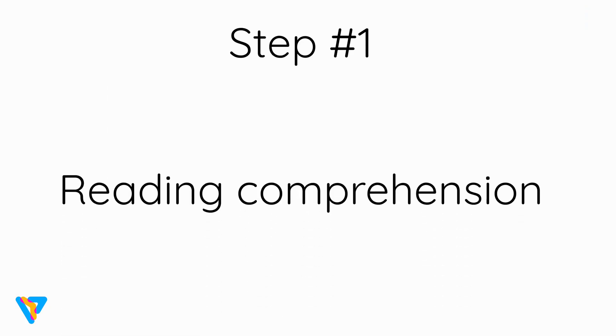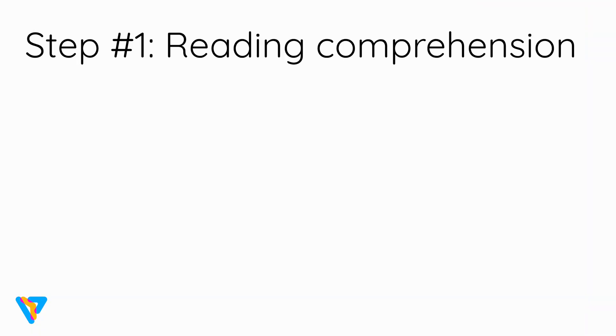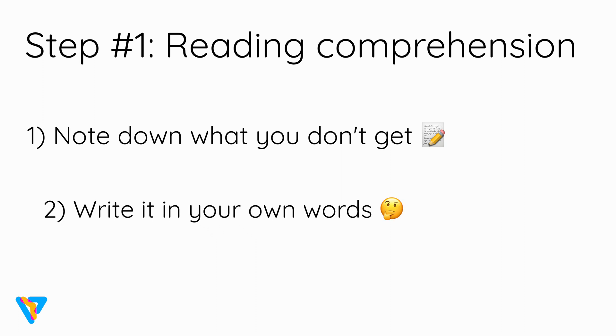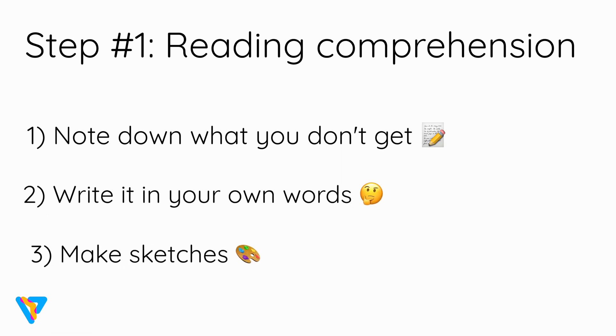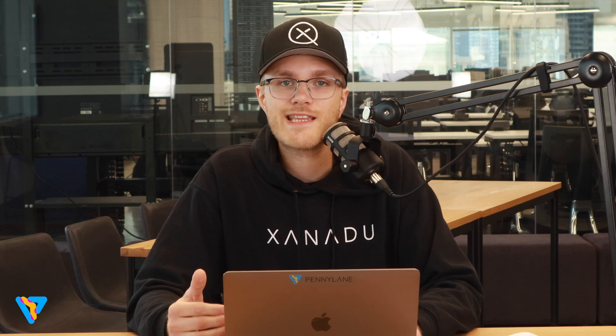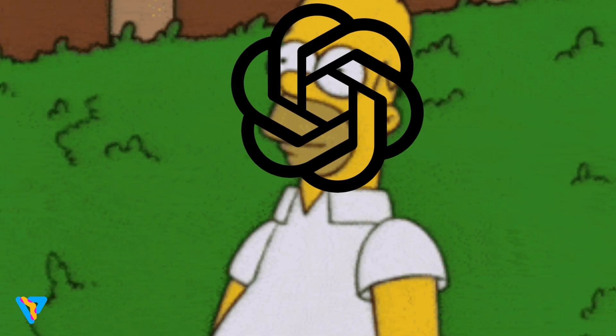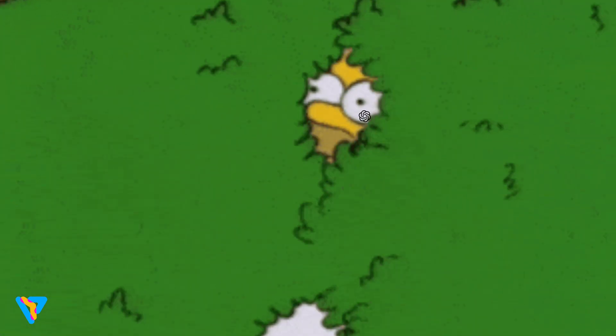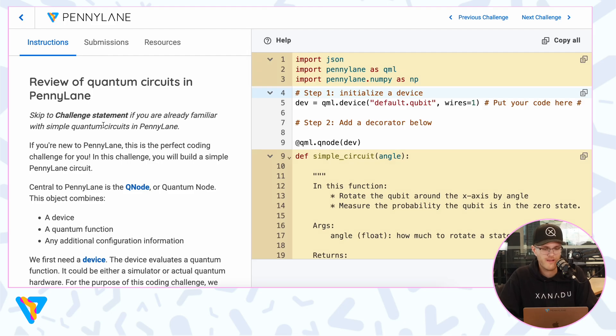Step number one in how to approach coding challenges: reading comprehension. This really goes for any written problem you encounter in life. Read it well, note down what you don't understand, write out the question in your own words, do your own sketches. Most importantly, resist the urge to just copy and paste the problem statement into something that could spit out a solution for you. Remember, we're here to learn.